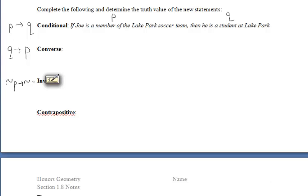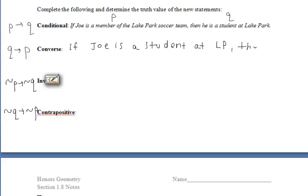Remember, the converse is 'if Q, then P.' So the converse of that statement — we take our conditional and just flip it around. If Joe is a student at Lake Park (LP for short), then he is on the Lake Park soccer team. That would be the converse of our original conditional statement.